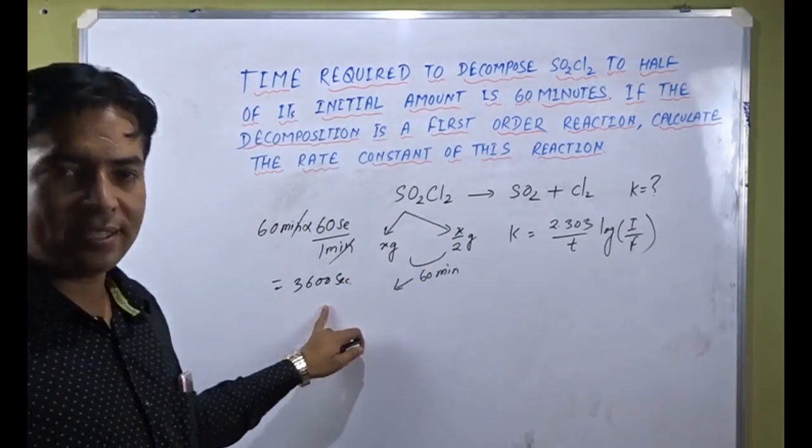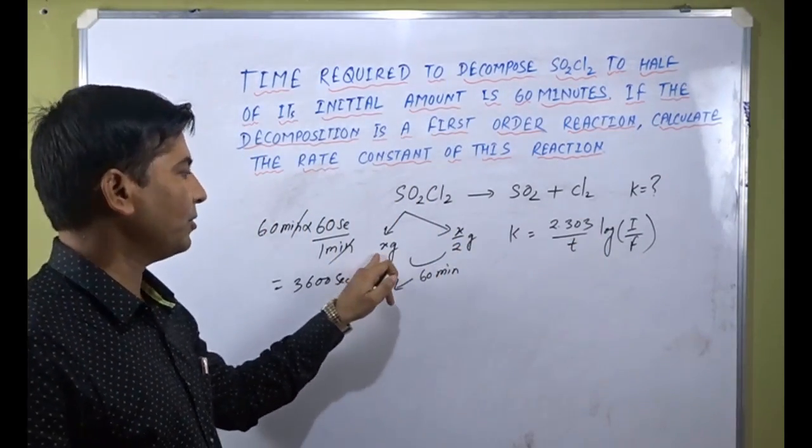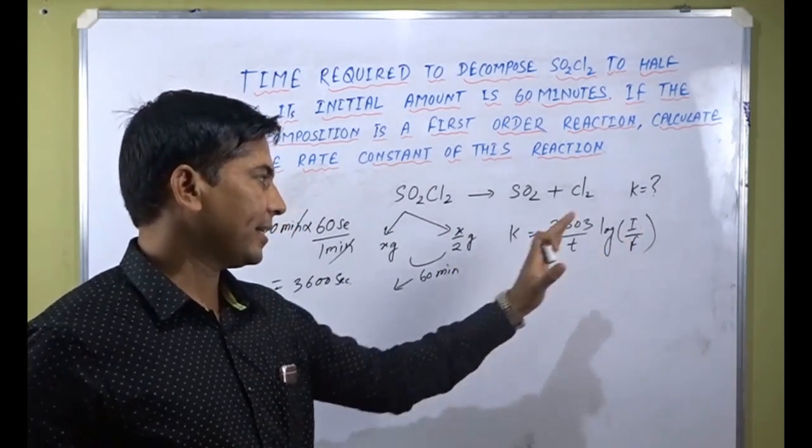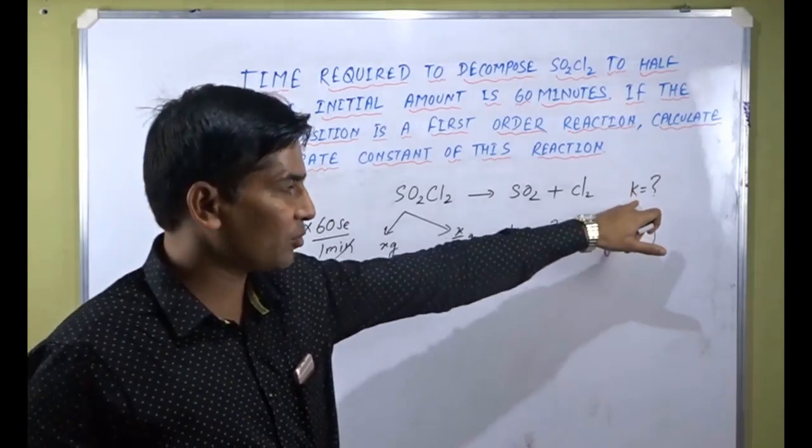Time is given, that is 3600. Initial amount is given as X grams and final amount is X by 2. We can plug in this data and calculate rate constant K.